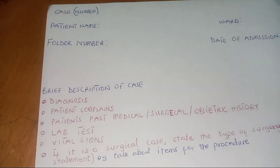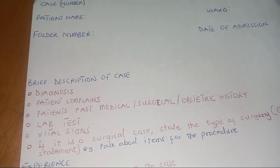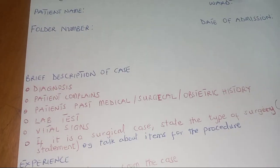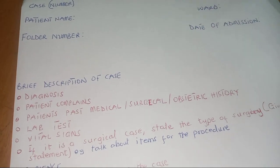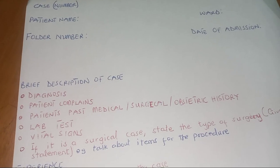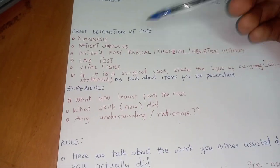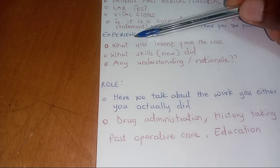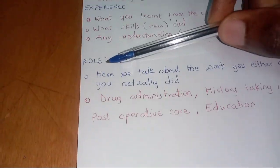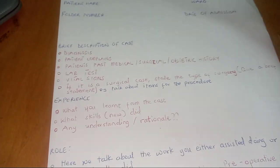Or 'Case 2' if it's the second case. The patient's name, the ward, the folder number, date of admission — you'll get all this information in the patient's folder or even the nurse's notes. Now there are three important points to note: brief description of case, experience, and the role. This is the format for clinical case reports.